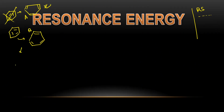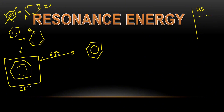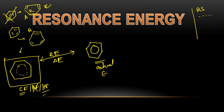We'll have a resonance hybrid obviously, so this will be our resonance hybrid of benzene. Now this resonance hybrid and the actual benzene molecule will have some difference in their stability. This difference is called resonance energy. So resonance energy is the energy difference between the canonical form or hybrid form and the actual molecule's energy — this energy difference is basically resonance energy, delta E.